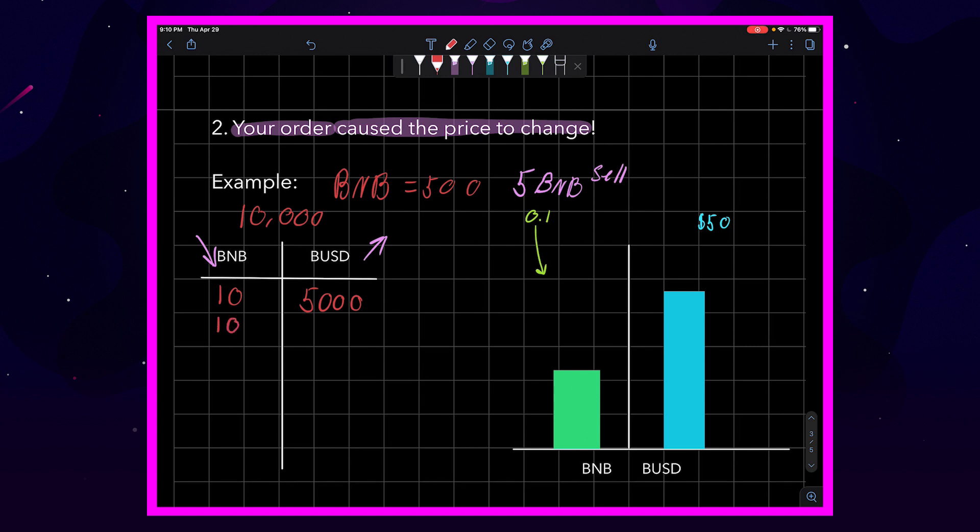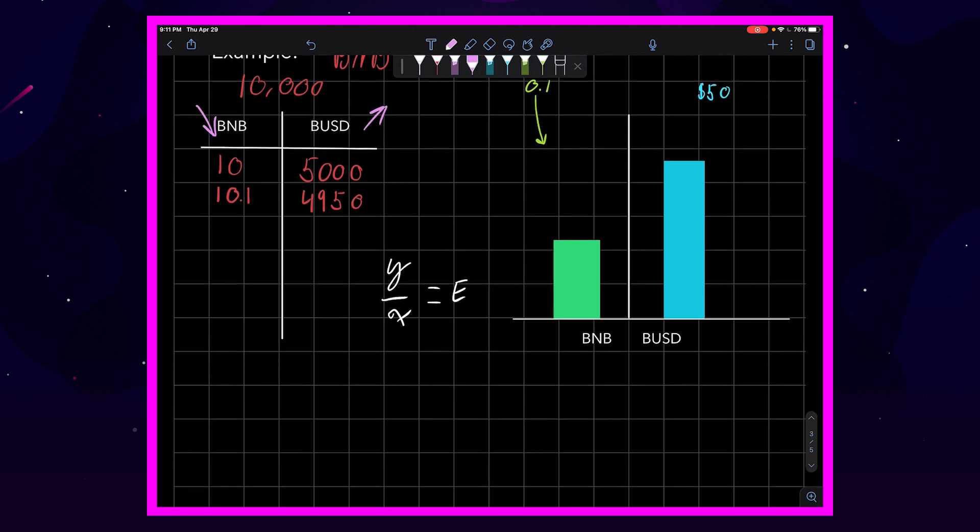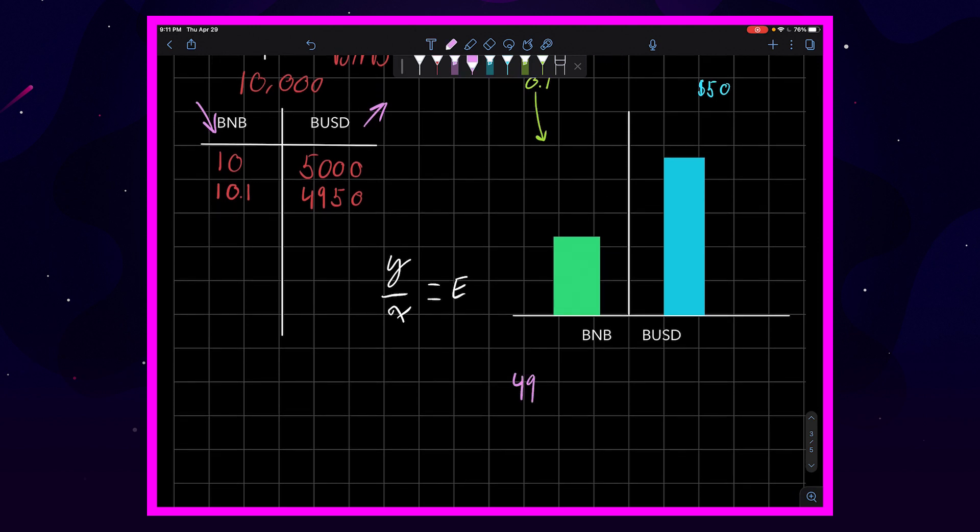But we realize that once that happens, the values or the amounts of tokens inside the pool is now different. And that causes the price of the tokens in the pool to be different. If we jump into our favorite equation, Y over X equals the exchange rate, and we plug in our new values being 4,950 BUSD over the 10.1 BNB, we come out with a number looking like 490.09.